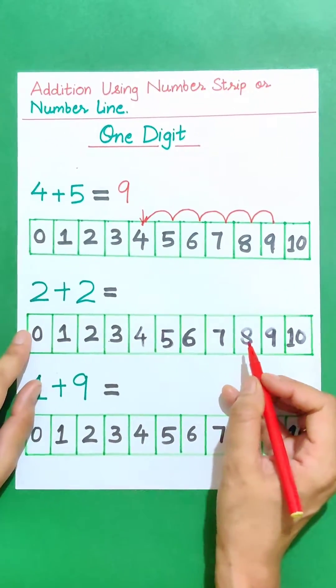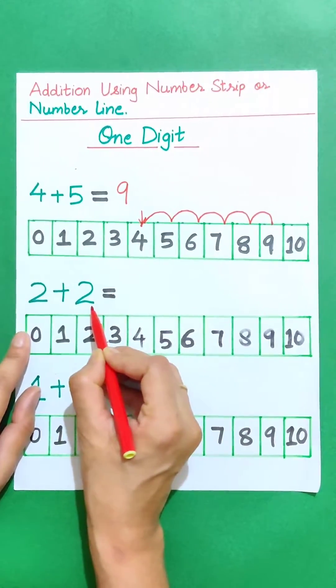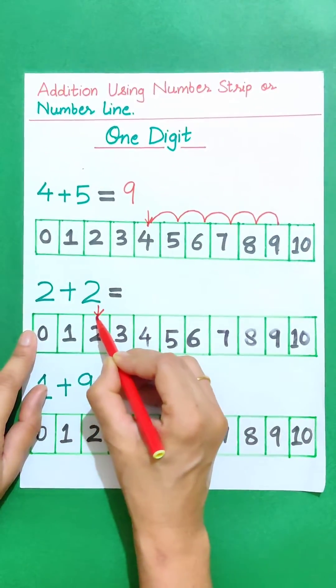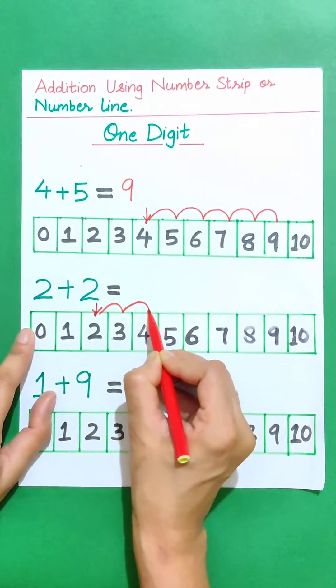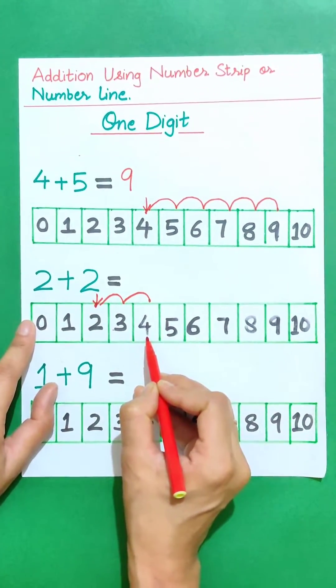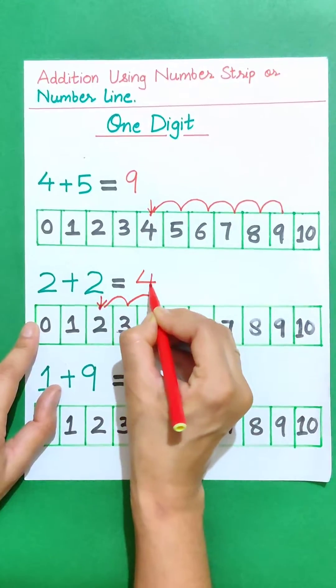Let's move on to another example. 2 plus 2. Start from number 2 and jump forward to 2 steps. 1 and 2. So the answer is 4. 2 plus 2 is 4.